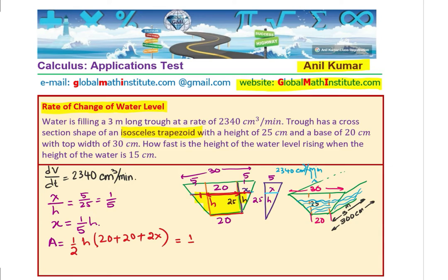Let us simplify this. We can say h times, 20 half is 10, so 20, plus 2 divided by 2 is x. We can now write x as one fifth of h, and we can open this bracket to write it as 20h plus one fifth of h squared. So that becomes the area of cross section at any instance of time when the height is h.